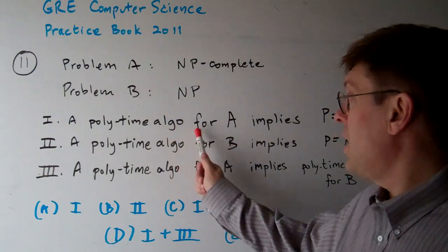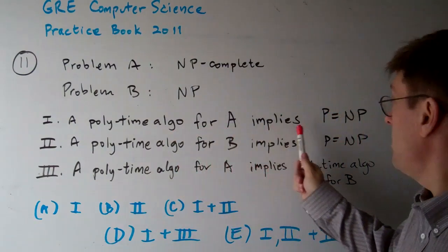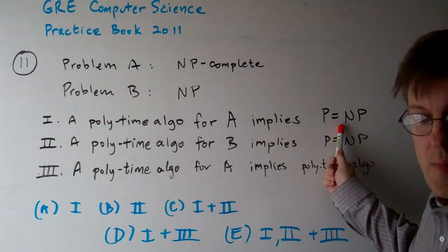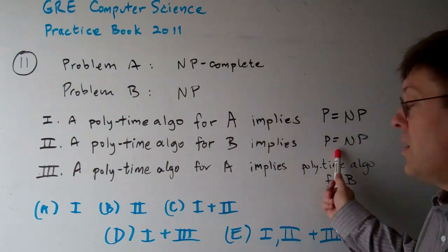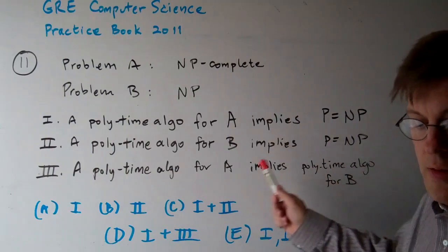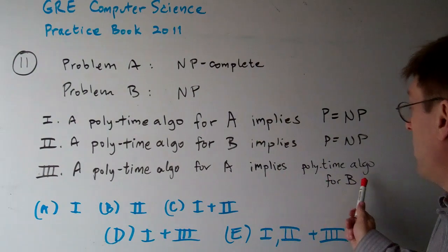One, there's a polynomial time algorithm for A implies that P is the same as NP. Two, a polynomial time algorithm for B implies that P is equal to NP. And three, a polynomial time algorithm for A implies a polynomial time algorithm for B.